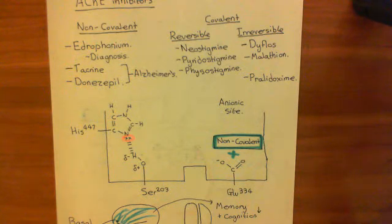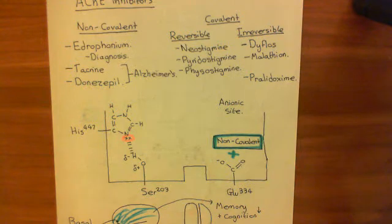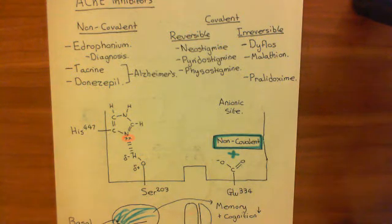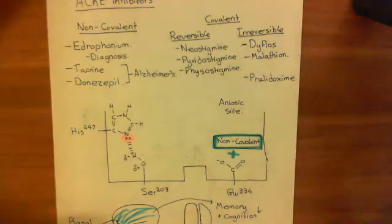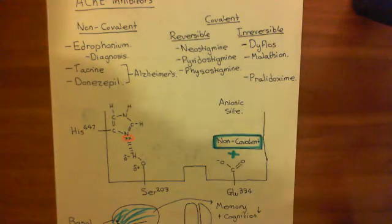So that is acetylcholinesterases and the inhibitors. We've looked at three conditions which they can be used to treat: myasthenia gravis, glaucoma, and also Alzheimer's disease. And if you want to count head lice as the fourth, you're free to do so.